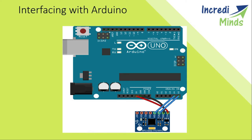Now we will look at its interfacing with the Arduino. The Ground pin is connected to the GND pin of the Arduino. VCC is connected to the 5V pin. SCL is connected to A5 of the Arduino, and SDA is connected to A4 of the Arduino. These A4 and A5 are the analog pins. As you can see, only 4 pins are being used. The SDA and SCL pins of the module are used for I2C communication, therefore we connect them to A4 and A5.